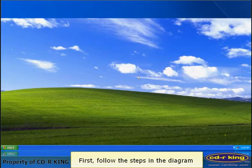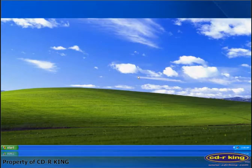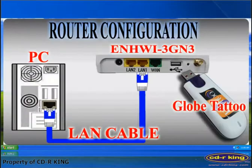First, follow the steps in the diagram. Connect your broadband modem to the USB port of the 3G router, then using a LAN cable, connect LAN 1 of the router to your desktop or laptop.